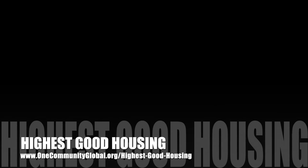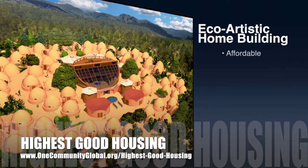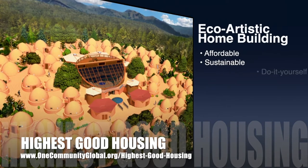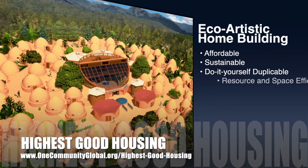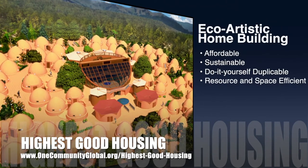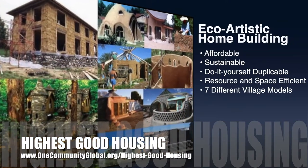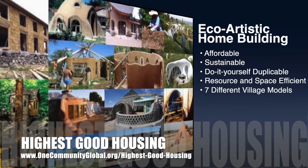The One Community approach to highest good housing is eco-artistic home building that is affordable, sustainable, do-it-yourself, duplicable, resource and space efficient, and consists of seven different sustainably constructed village models.